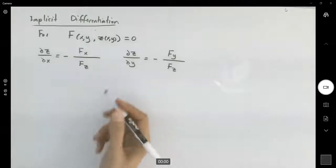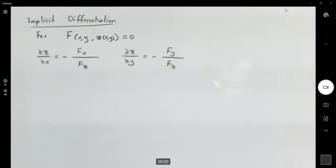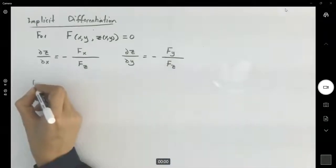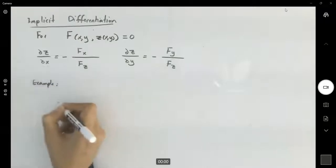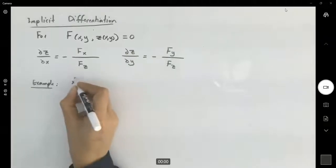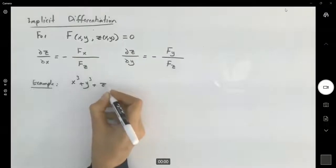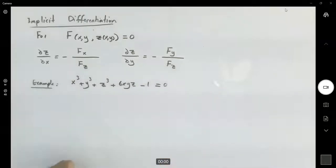Well, you might be interested in finding the partial derivative of x with respect to y. You're going to follow what you did as before. Let's take a look at one example here. This example says you have x cubed plus y cubed plus z cubed plus 6xyz minus 1 equal to zero. You want to know what is the rate of change of z with respect to x at any point? What is the rate of change of z with respect to y at any point?